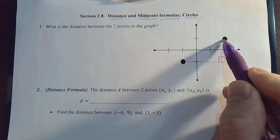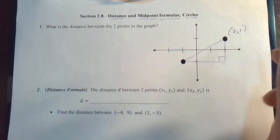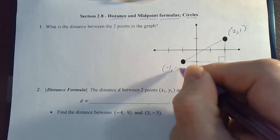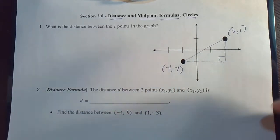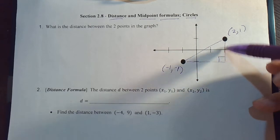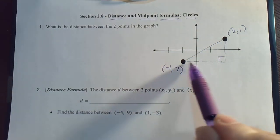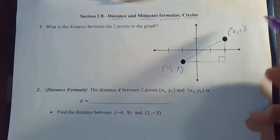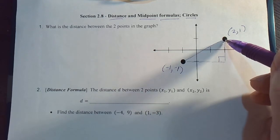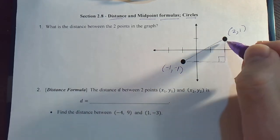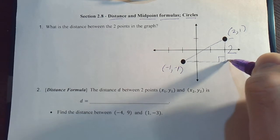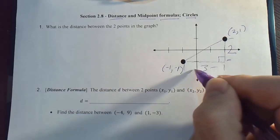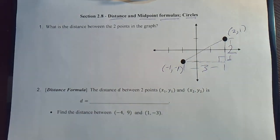This would be one, two, this would be two comma one. And this one would be negative one, negative one. So based upon that, we know the vertical distance and we know the horizontal distance. You can actually just count this out. One, two. So that distance is two. And then this distance is going to be one, two, three.